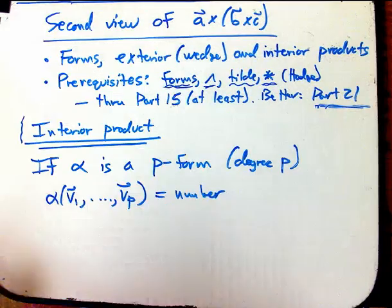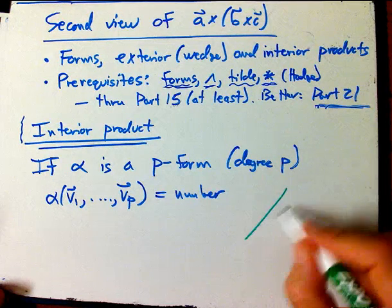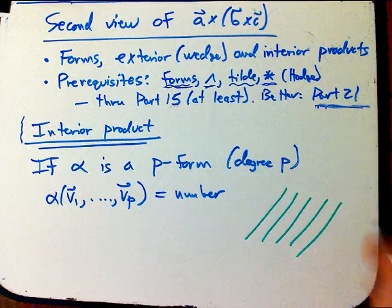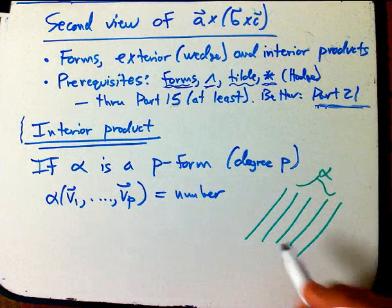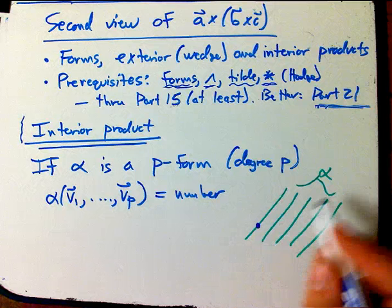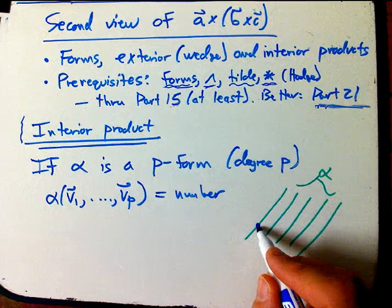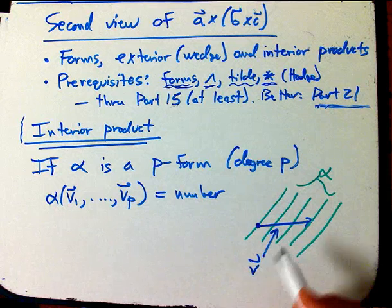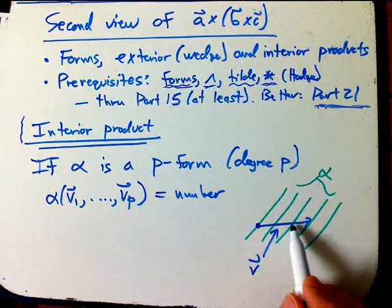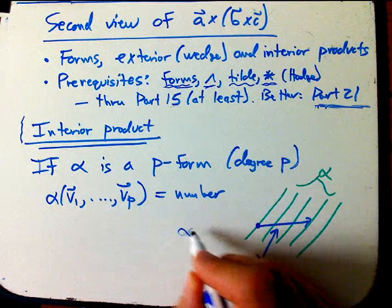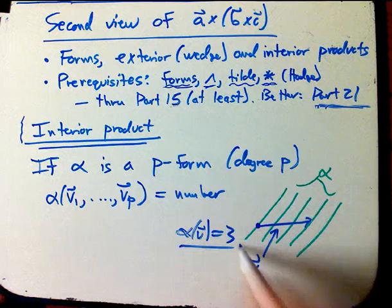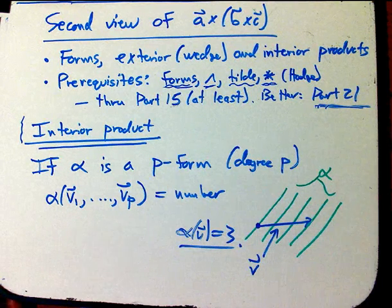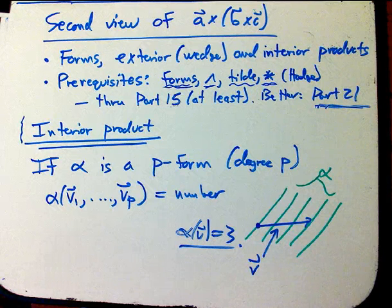So the most simple example of that would be if I have a bunch of parallel lines representing alpha, and that would be a one form, and then the way it eats this vector v, say, is that it just counts how many levels it crosses. So one, two, three, this would be a picture of alpha of v is equal to three. That's the one form picture, and I'll draw a two form picture in a minute to remind you how that works.